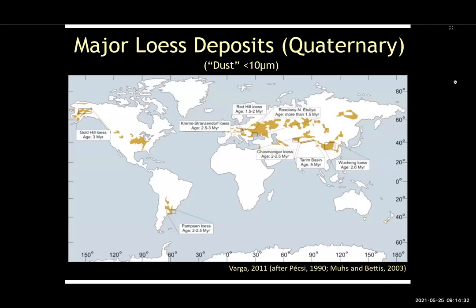If we look at where loess deposits are on the planet today, most of them are characteristically at mid to higher latitudes — roughly 35 to 60 degrees north — and fewer but still present in the south, especially Argentina. Loess is often referred to as a quaternary phenomenon because it's very well known in the Quaternary record. The vast majority of it is produced by glacial grinding, which is why it basically hugs the edges of ice sheets, or comes out via river systems like the Mississippi, which carries it farther south and then it blows off floodplains.